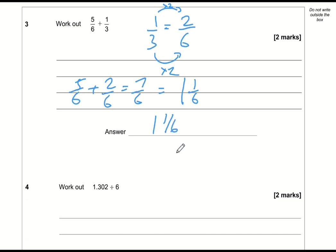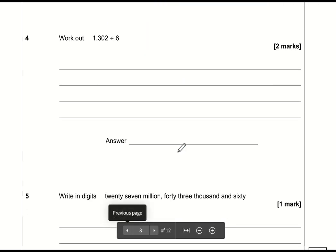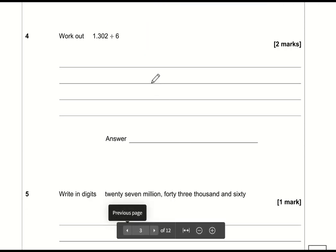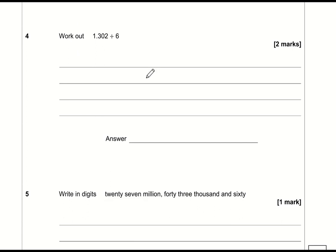Question 4: 1.302 divided by 6. This question is no more difficult than 1302 divided by 6. We need to use the bus stop method. The only difference is we just need to put a dot directly above the dot on top of the bus stop.